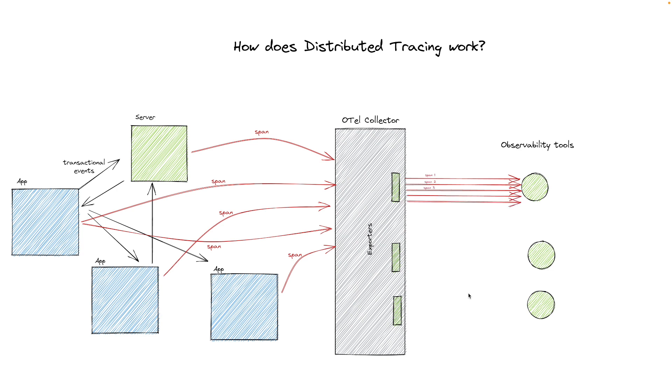The exporter will then publish every span with its associated metadata, including the trace ID, to the observability tool of choice. The trace is then stitched together by the backend observability tool.